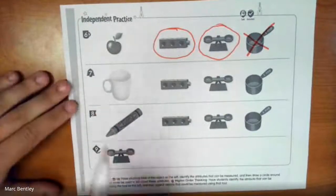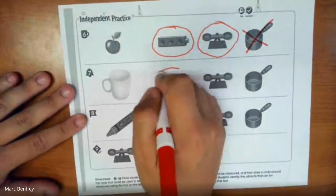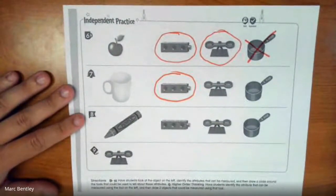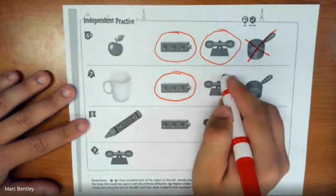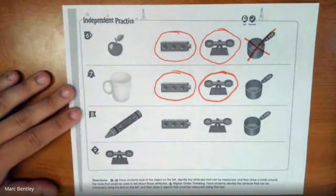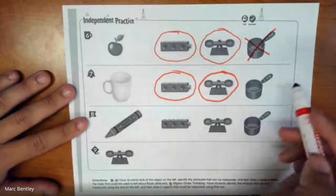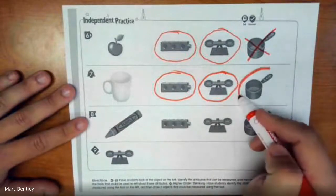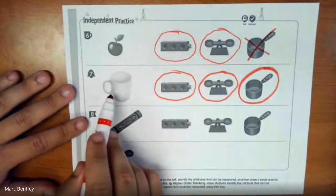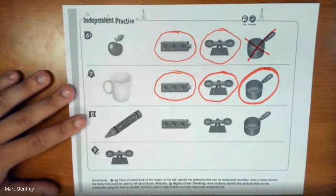Moving down to number seven, we've got a mug. We could measure the length or the height of the mug. We could definitely measure the weight. And because this mug can be filled up, we can also measure the capacity, so how much water or any other liquid could we get in this cup. So all three get circled for number seven.